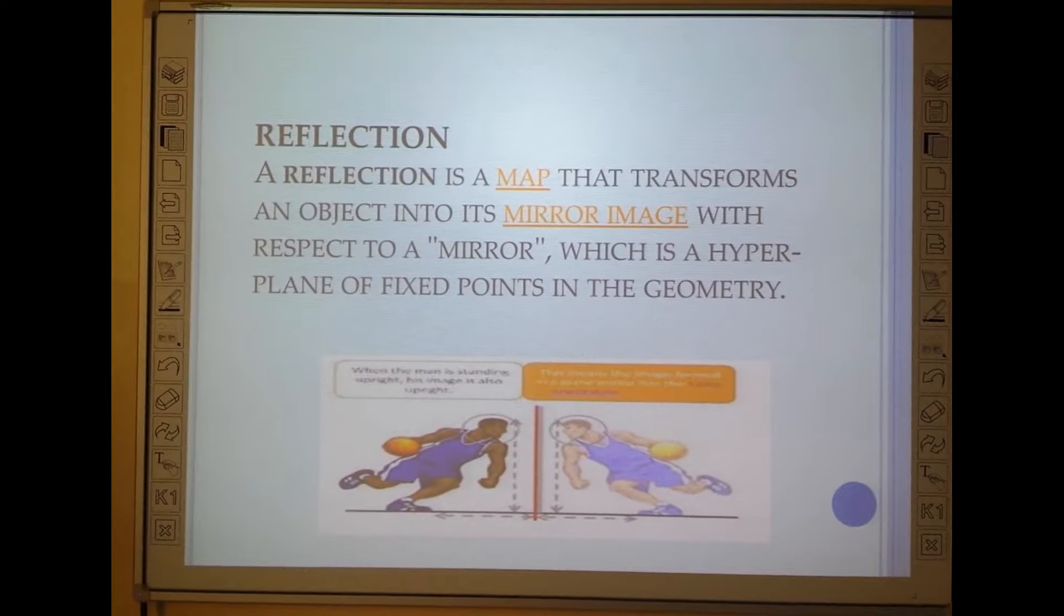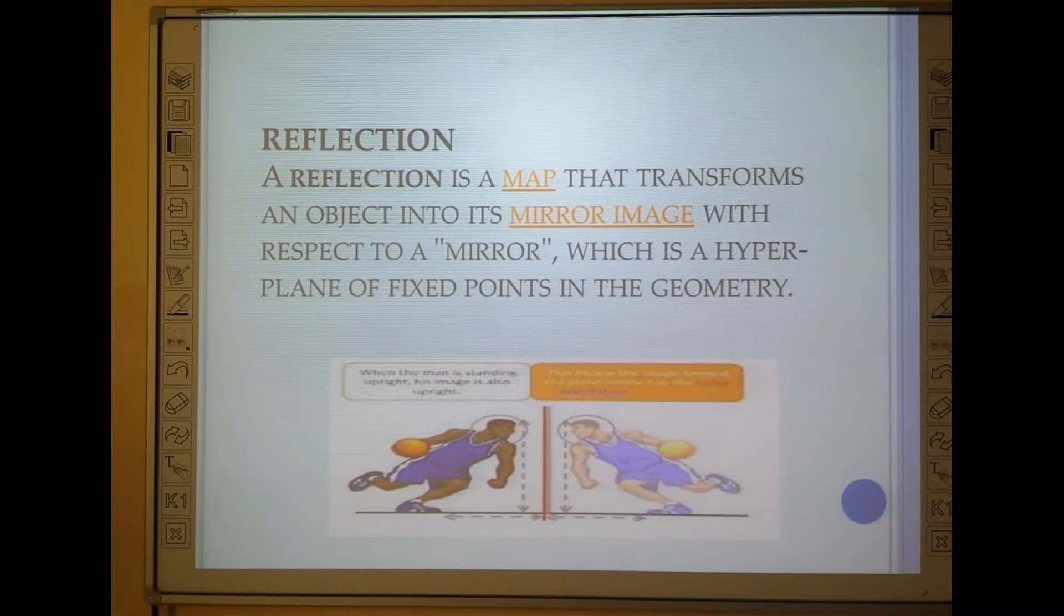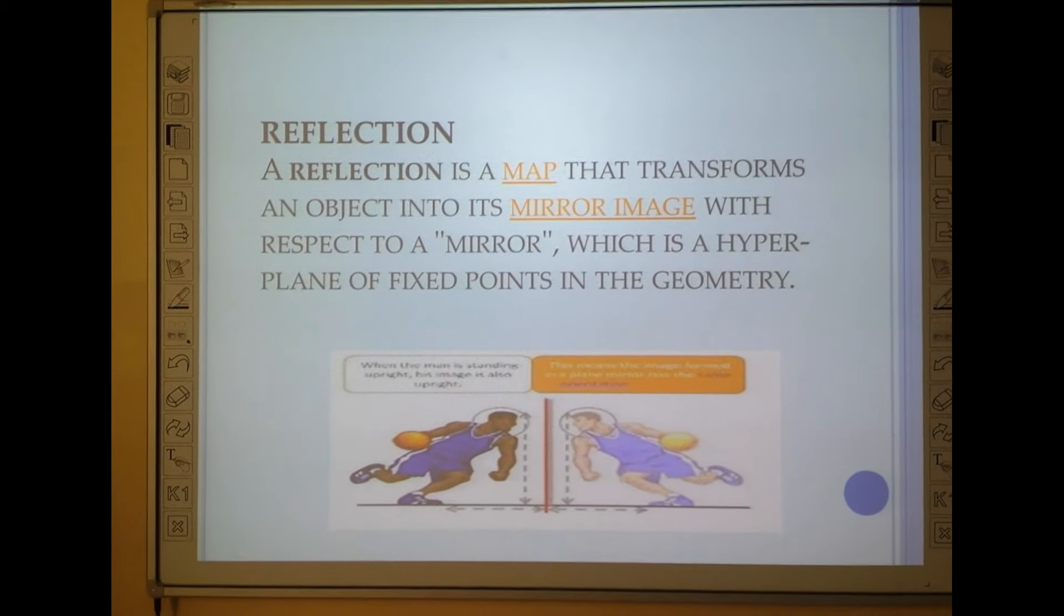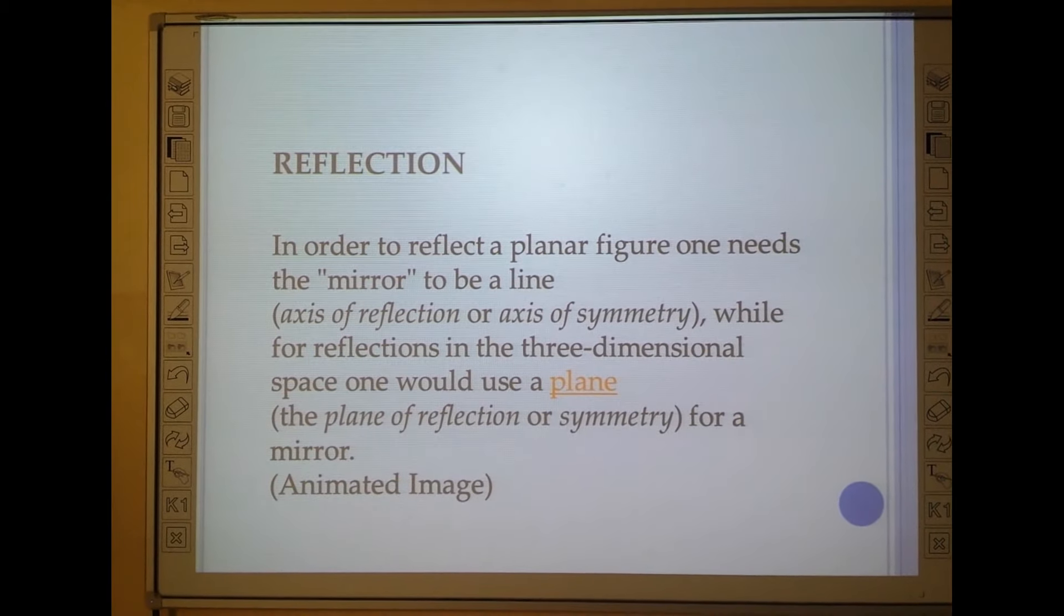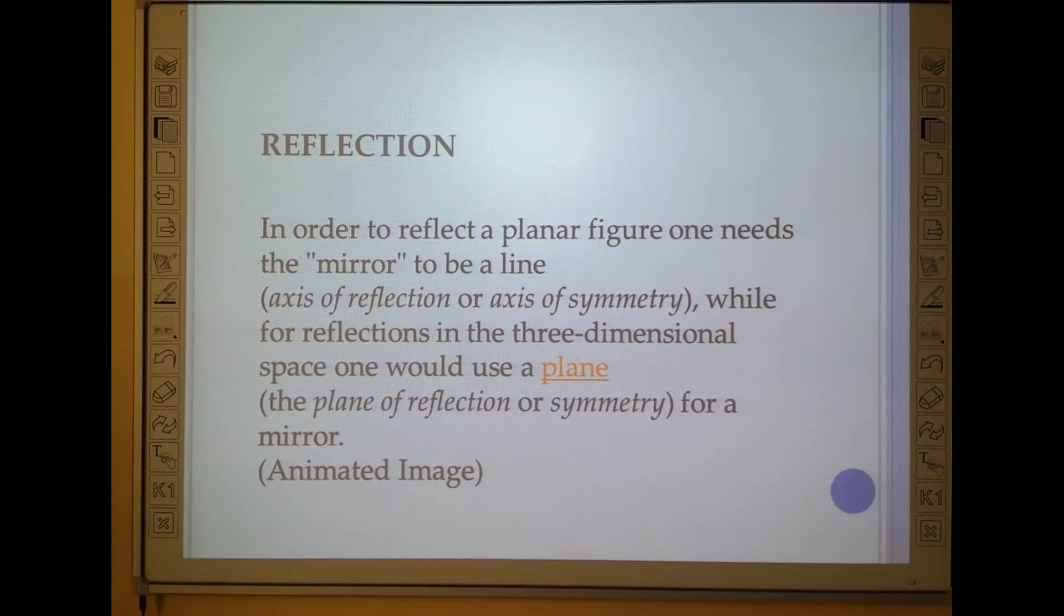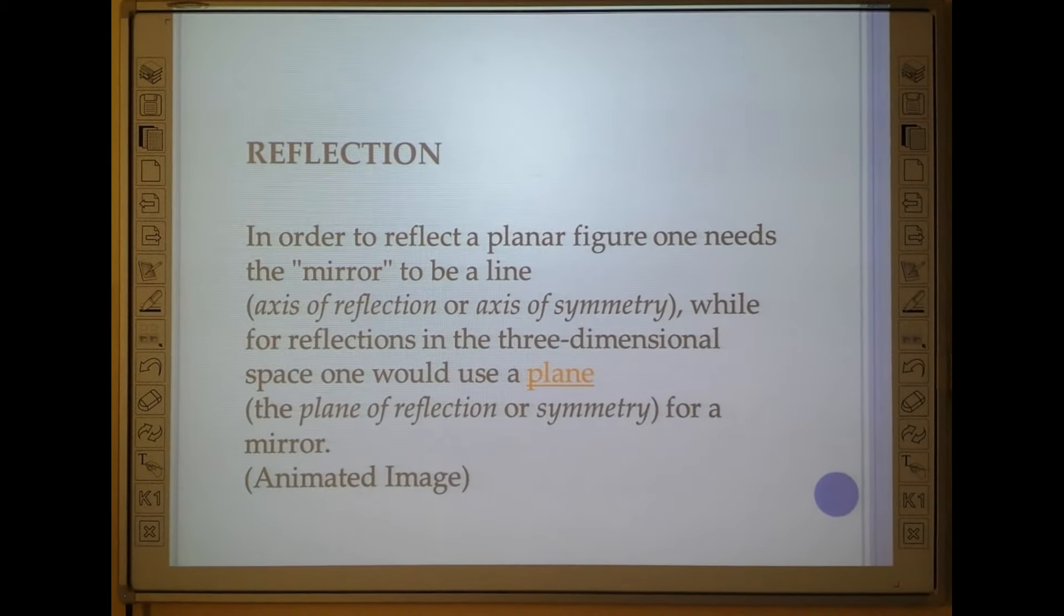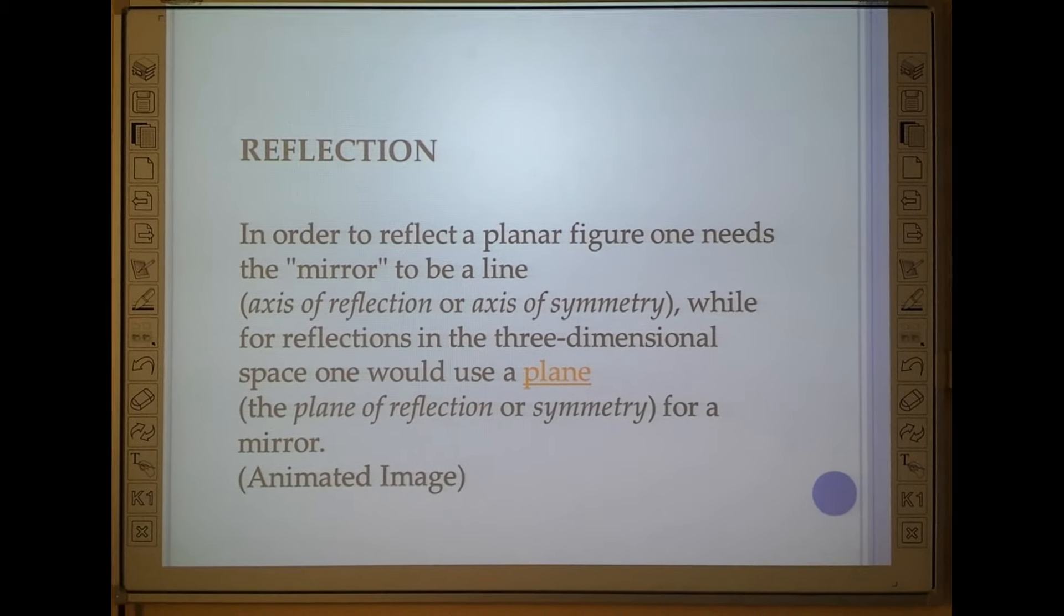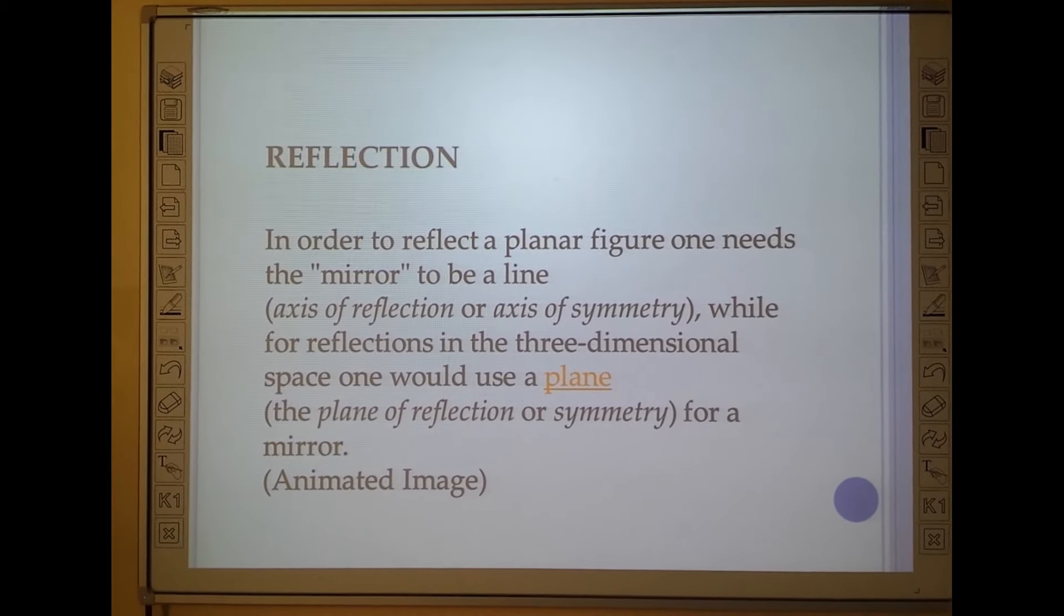Reflection. It is a map that transforms an object into its mirror image with respect to a mirror, which is a hyperplane of fixed points in geometry. In order to reflect a planar figure, one needs the mirror to be aligned. The main feature of the reflection is the axis of reflection, the axis of symmetry you may say, or the line of reflection. While for reflection in three-dimensional space, one would use a plane, the plane of reflection or symmetry. That is a rotational symmetry for a mirror.